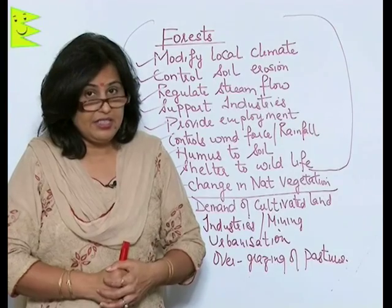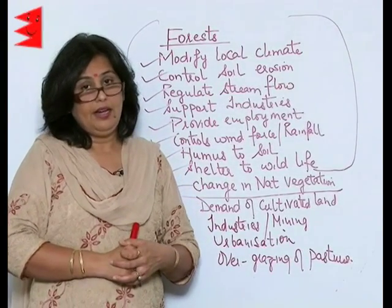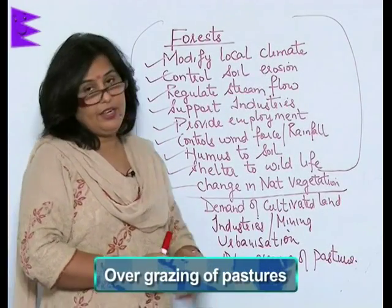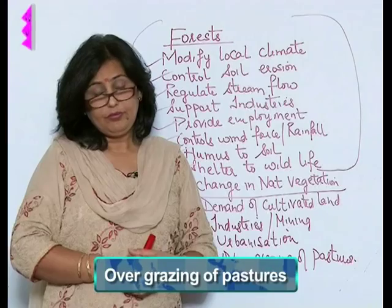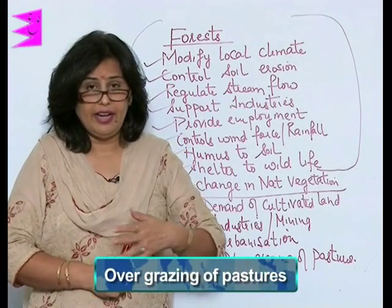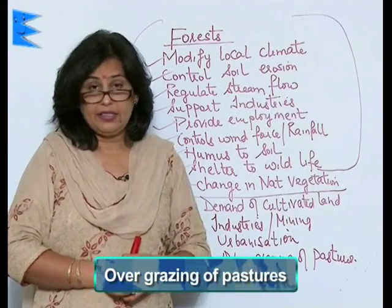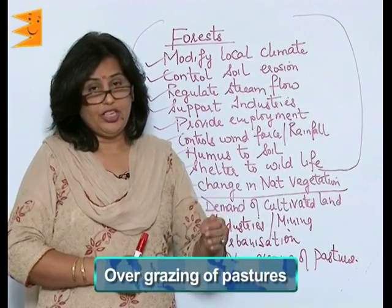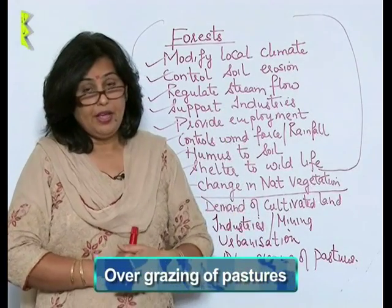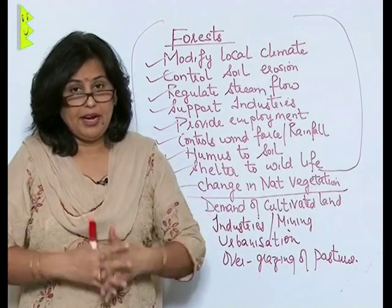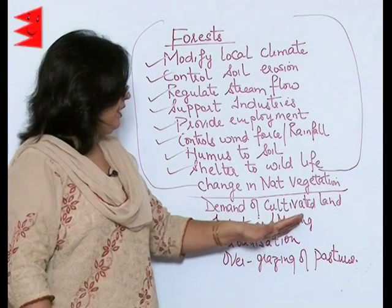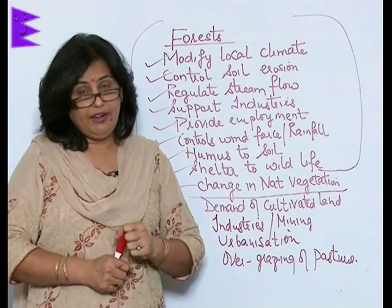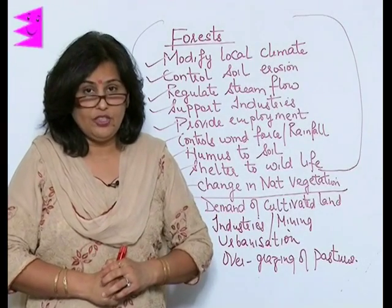Next is overgrazing of pastures. Animals are left astray and graze recklessly, making natural vegetation take a different shape. So whether it is industries, mining, overgrazing, or increased cultivation of land, all are together making a difference in the change in natural vegetation of India.